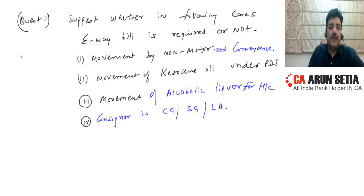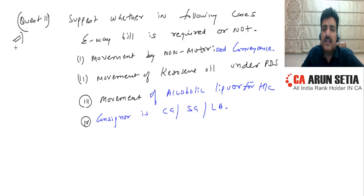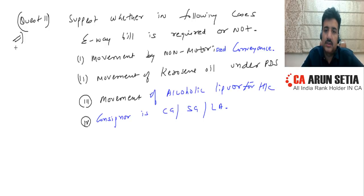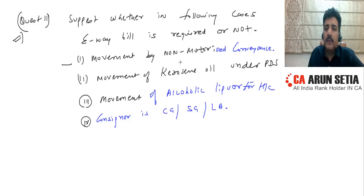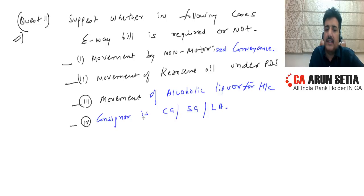Question number 11: Suggest whether in the following cases e-way bill is required or not. Case 1: Movement by non-motorized conveyance. Case 2: Movement of kerosene oil under PDS. Case 3: Movement of alcoholic liquor for human consumption. Case 4: If the consignor is Central Government, State Government, or local authority.